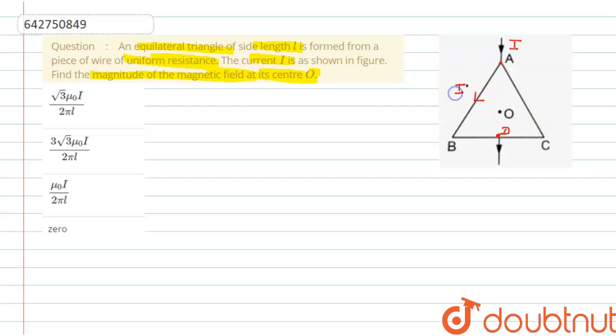Hence, current to this arm is I by 2 and current through this arm is taken as I by 2. Now the magnetic field at the point O, if I take this distance as R, then the magnetic field at point O because of the line element AB is given by...